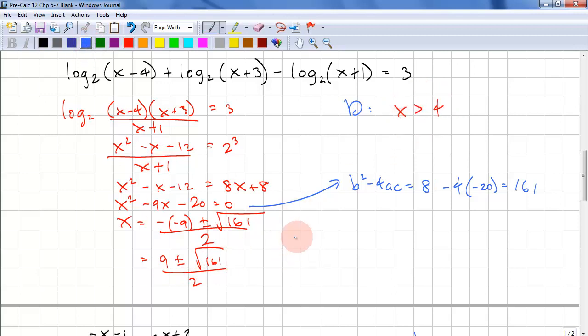So we'll write (9 - √161)/2 is extraneous. So (9 + √161)/2 is the solution. That completes that example. Let's look at another one.